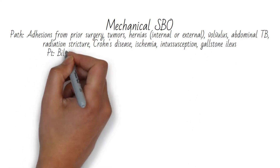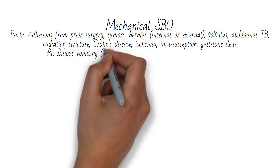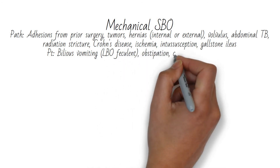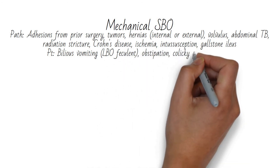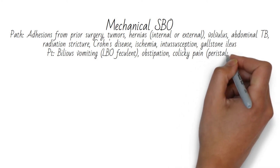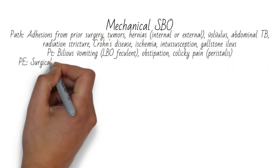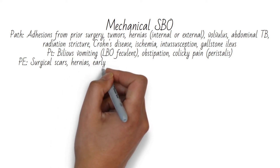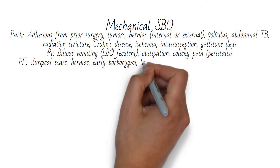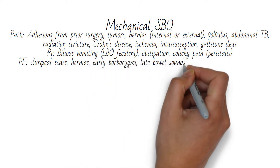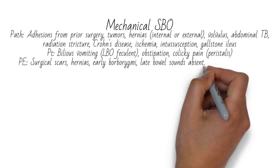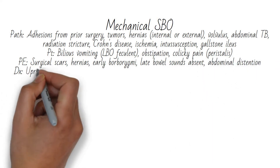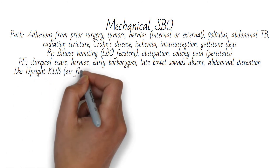The patient will have bilious vomiting — feculent vomiting is associated with large bowel obstruction. They may have diffuse colic abdominal pain that worsens as the peristaltic wave moves toward the obstruction. Obstipation indicates a complete obstruction. On exam, the patient may have scars from prior surgery or trauma.